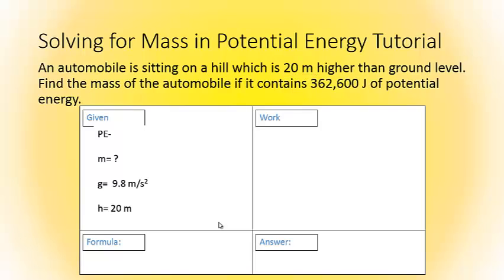Then, our gravity is always going to be the same on Earth. Gravity is always going to be 9.8 meters per second squared. And finally, 362,600 joules is our potential energy. So we're going to plug 362,600 joules for our PE value.